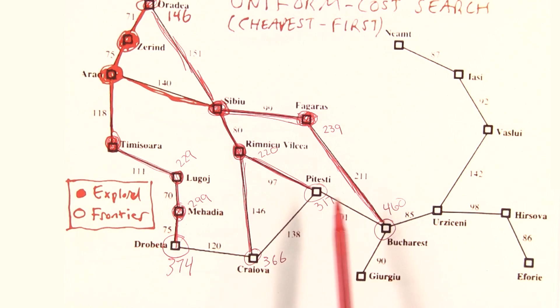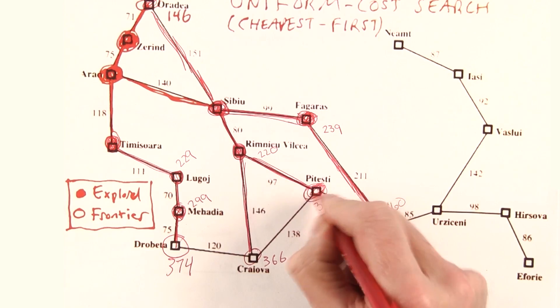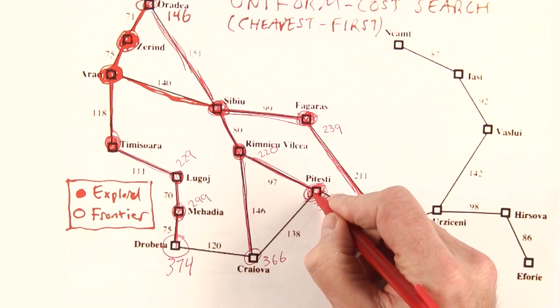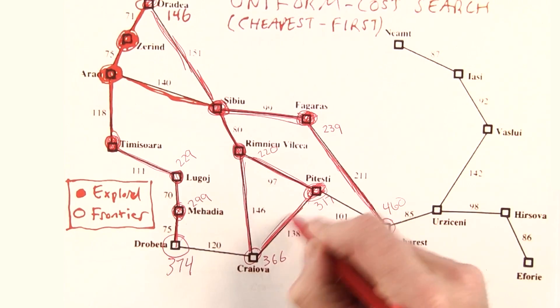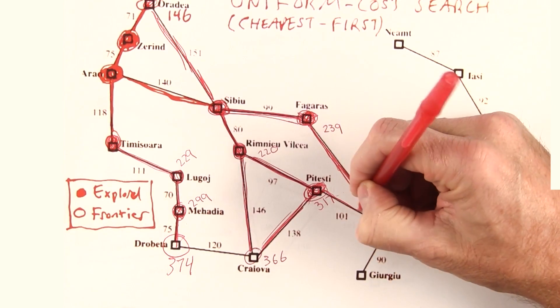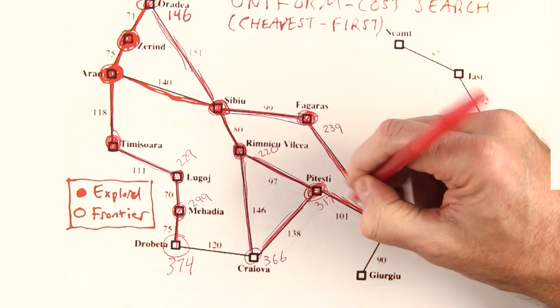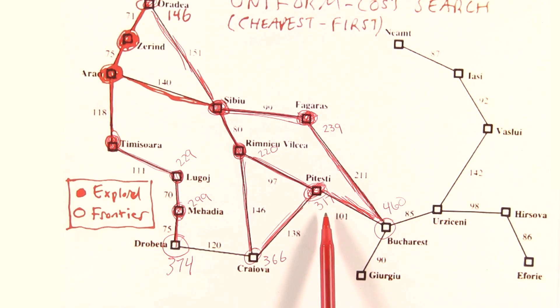Now the cheapest path is over here at 317. We'll mark that as explored and add two more paths. One here that's a worse path, so it gets dropped. And one path that also reaches the goal, and that has a total cost of 418.